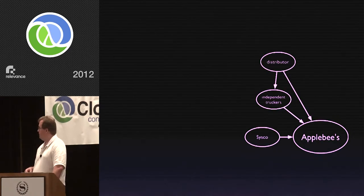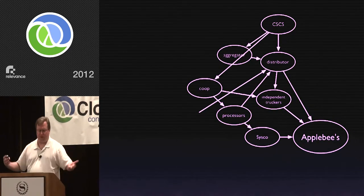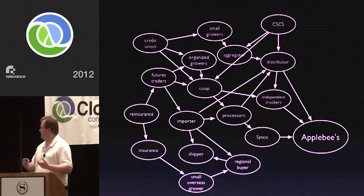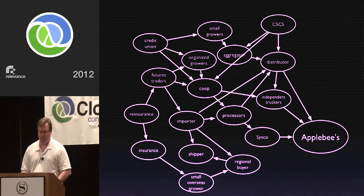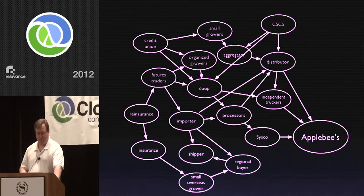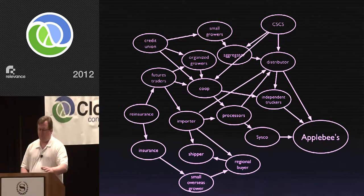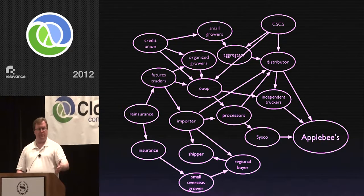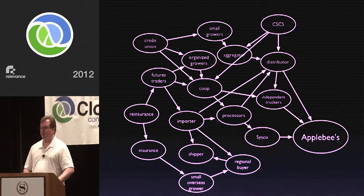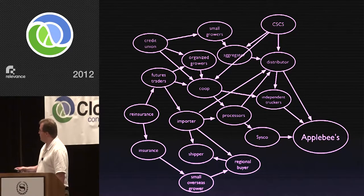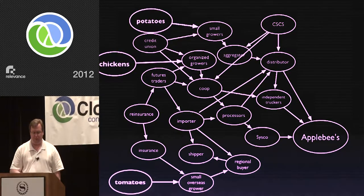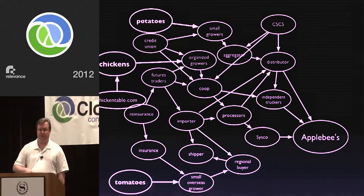We've got a first tier of distributors — people who actually put things on trucks. We've got truckers, independent suppliers, and a second tier of people who manage all of those services and supply the distributors. We've got a third tier of suppliers that are 10,000 miles away so we can get grapes and tomatoes in the middle of winter. We've got a fourth tier of financial services to these people, and derivatives on those financial services, and parasites upon those. Somewhere way out at the periphery, we've actually got chickens, tomatoes, and potatoes.